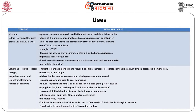Myrcene is present in citrus, clove, earthy, fruity, green, vegetative, and mango sources. Myrcene is a potent analgesic, anti-inflammatory, and antibiotic. It blocks the effects of promutagens implicated as carcinogens, such as aflatoxin B.